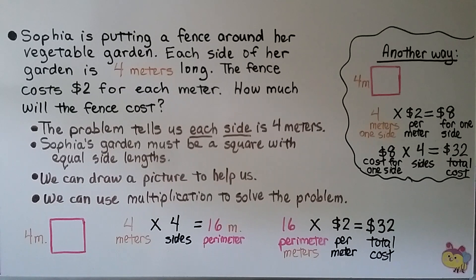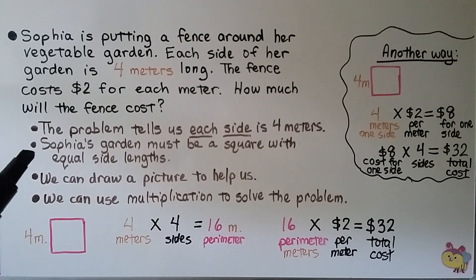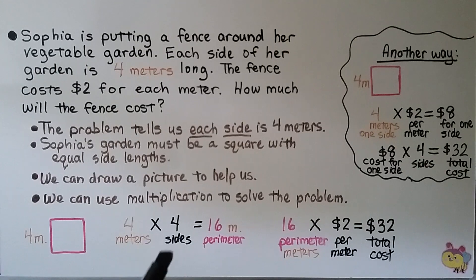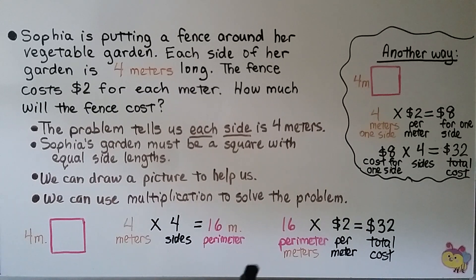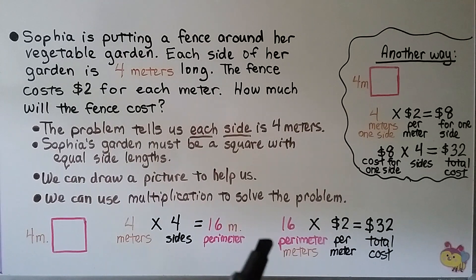Sophia is putting a fence around her vegetable garden. Each side of her garden is 4 meters long, and the fence costs $2 for each meter. How much will the fence cost? Since all sides are 4 meters, her garden must be a square. We can do 4 meters times 4 sides: 4 times 4 equals 16, so the perimeter is 16 meters. She has 16 meters of fence at $2 per meter, so we multiply 16 times 2, which equals 32. Her total cost is $32.